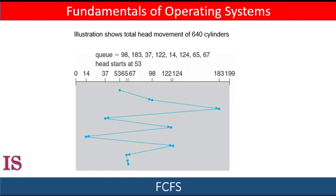The first-come-first-serve algorithm is considered fair, but it generally does not provide the fastest service. Consider this slide: a disk queue with requests for I/O blocks on cylinder 98, 183, 37, 122, 14, 24, 65, and 67, in that order.